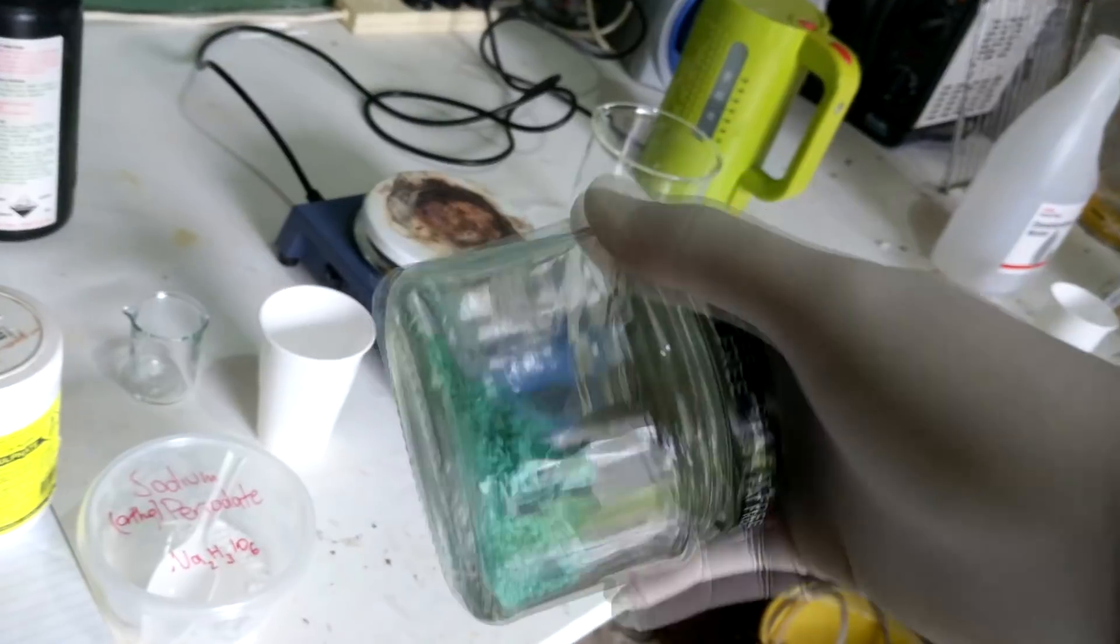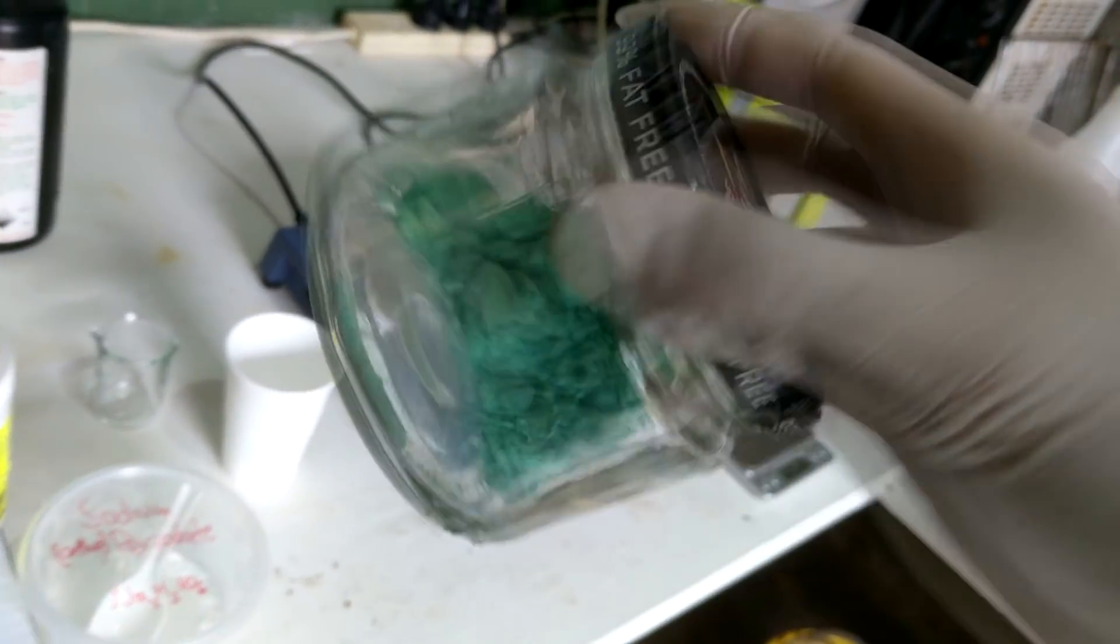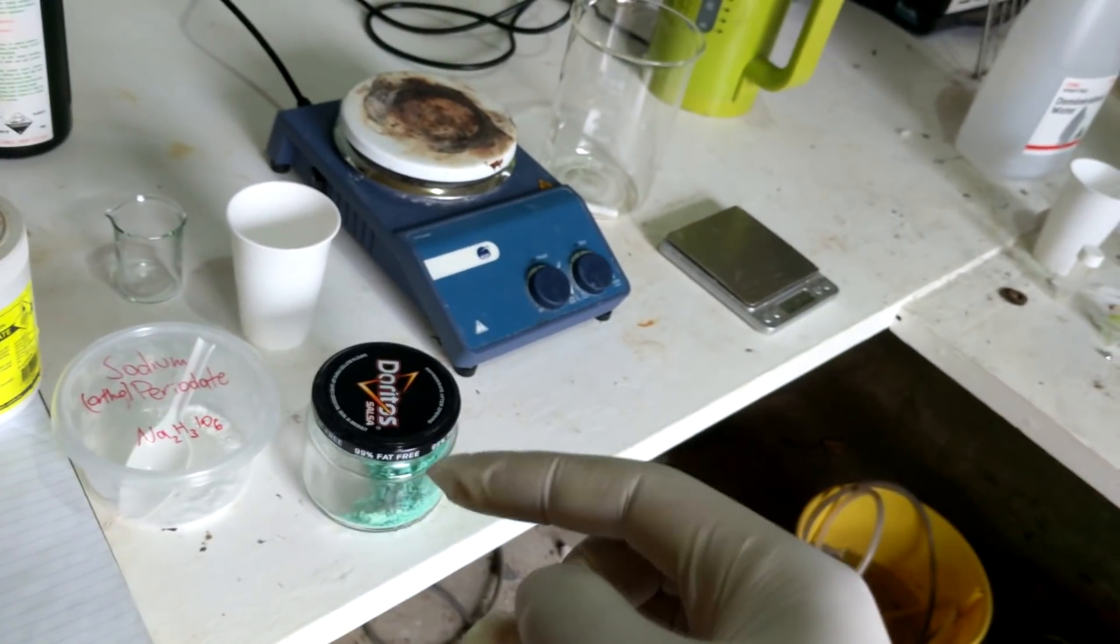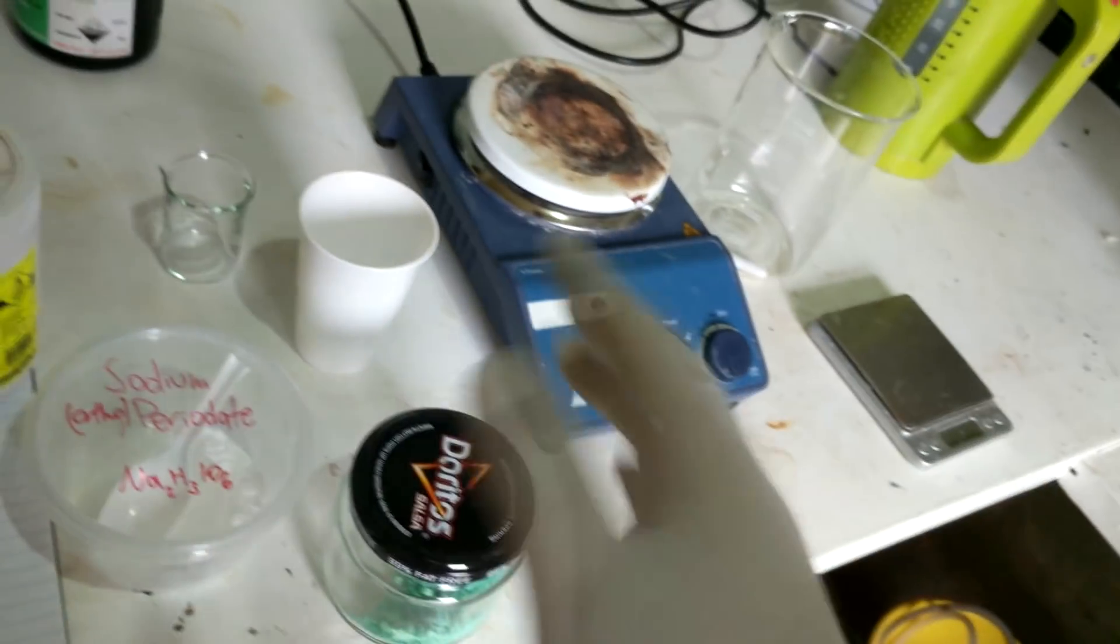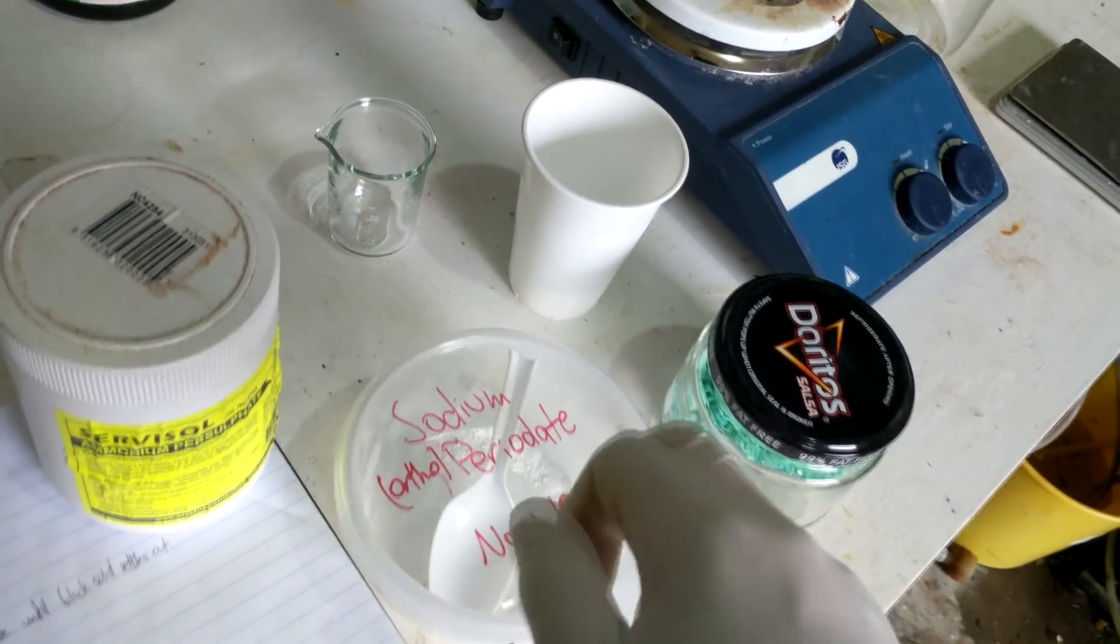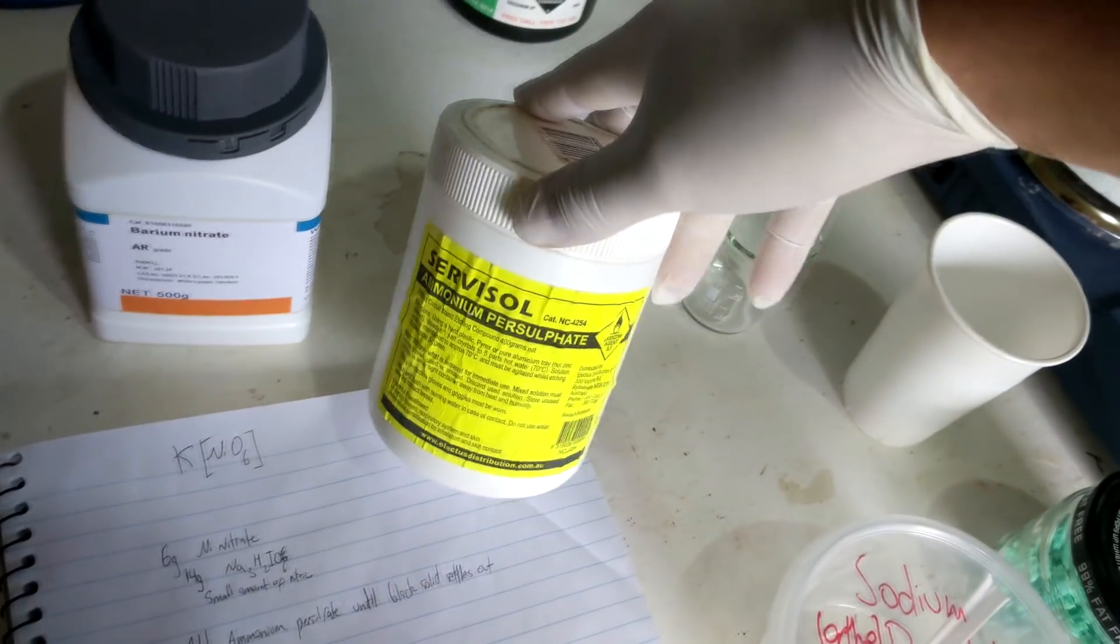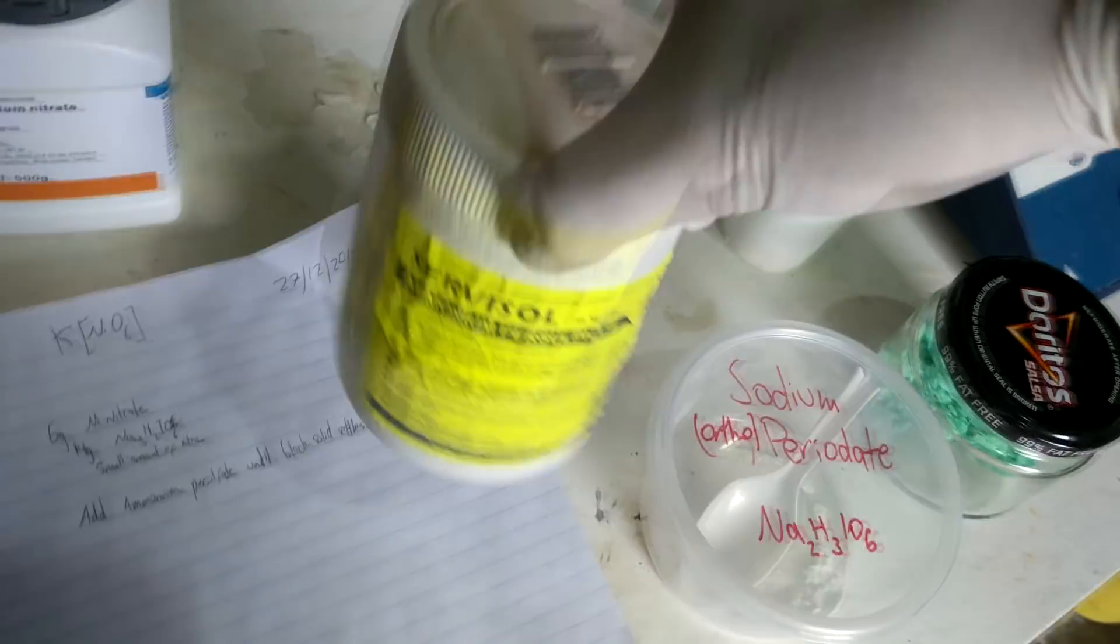To start with, we've got some nickel nitrate. So I made this from nickel carbonate, which I brought from a pottery store in the US quite a while back. And I used that nitric acid we got from the suck back the other day that was meant to be red fuming nitric acid, but ended up being quite somewhat more dilute. Nice Doritos container for it. We've got our sodium periodate, which we made the other day using chlorine and sodium iodide. And we have here ammonium persulfate, which is a chemical I don't use very often, but have quite a lot of, as you can see here.